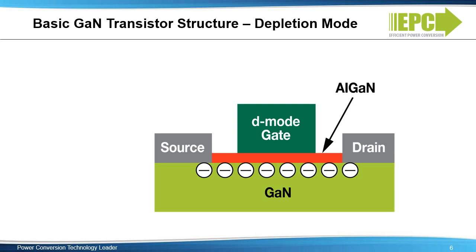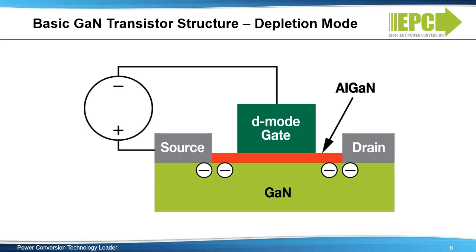The basic depletion mode GaN transistor structure is shown here. The red area is the strain-inducing aluminum gallium nitride layer. As with any power field effect transistor, or FET, there are gate, source, and drain electrodes. The source and drain electrodes pierce the top AlGaN layer to form an ohmic contact with the underlying 2-DEG. This creates a short circuit between the source and the drain, unless the 2-DEG pool of electrons is depleted and the semi-insulating GaN crystal can block the flow of current. In order to deplete the 2-DEG, a gate electrode is placed on top of the GaN structure. When a negative voltage relative to both drain and source electrode is applied to the gate, the electrons in the 2-DEG are depleted out of the device. This type of transistor is called a depletion mode, or D-mode.